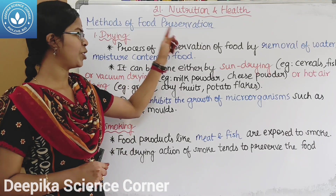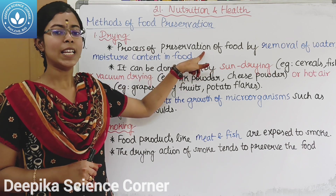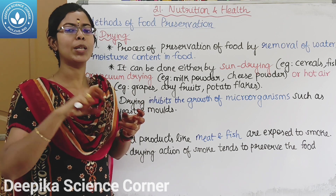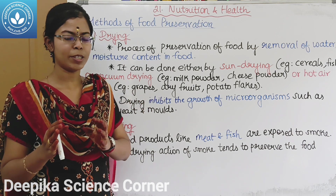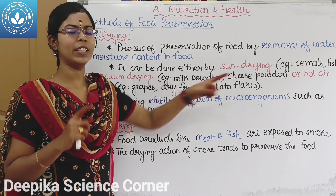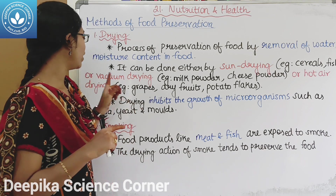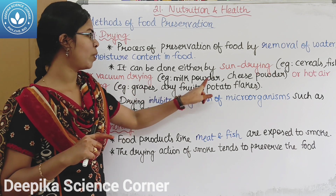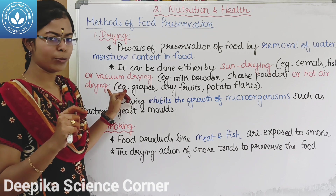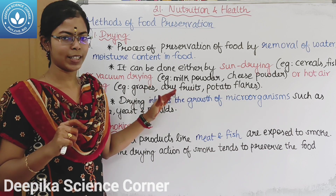Methods of food preservation. First, drying — one of the processes in which the water content or moisture content is removed from food. Methods include sun drying for cereals and fish, vacuum drying for milk powder and cheese powder, and hot air drying for grapes, dry fruits, and potato flakes.